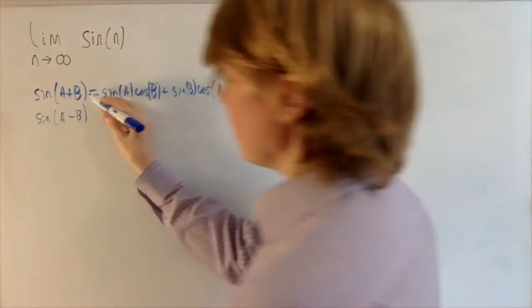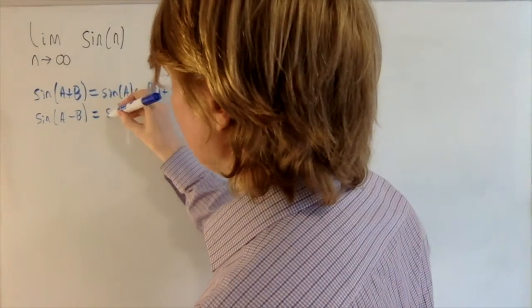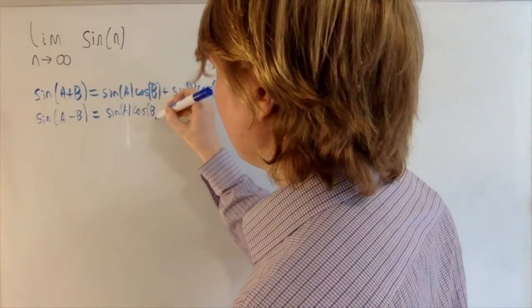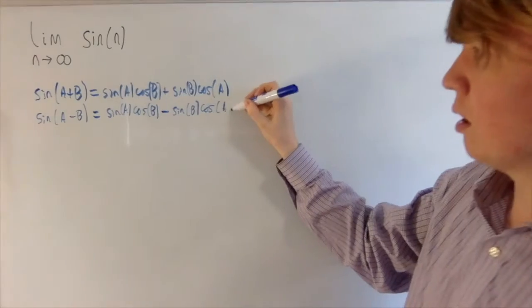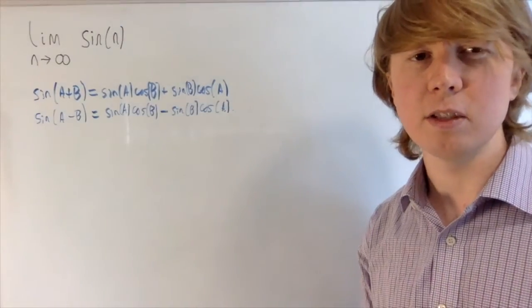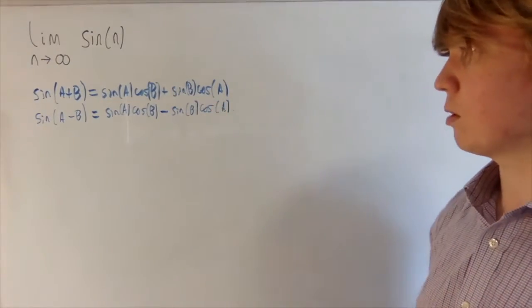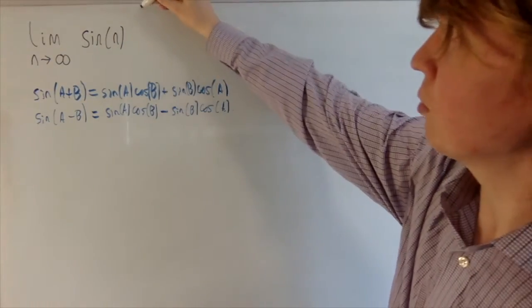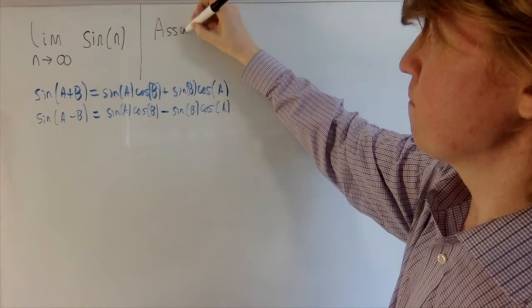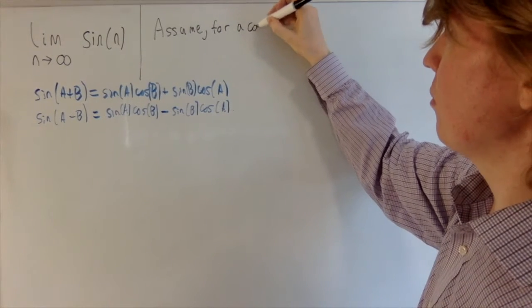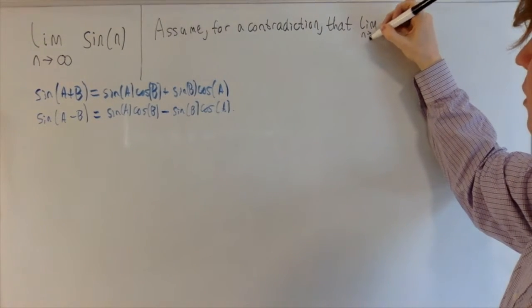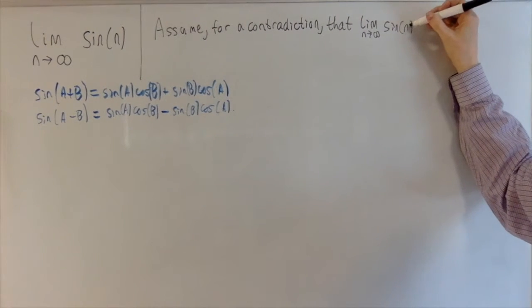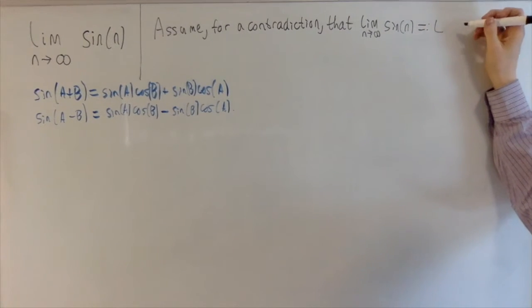We'll do something very similar with sin(a minus b). This is basically the same identity with b replaced by minus b, so you get sin(a)cos(b) minus sin(b)cos(a). We're going to use these two formulas, looking at the limit of sin(n+1) and sin(n-1), introduce some cosines, and get to a contradiction. So the first thing we're going to do is assume for a contradiction that this limit exists, and this will also tell us that the limit with n replaced by n+1 or n-1 will also exist.